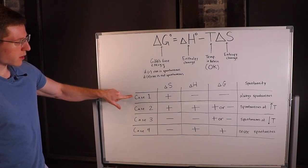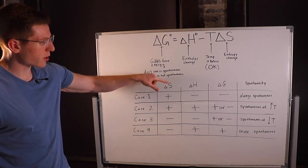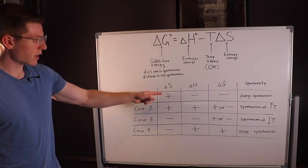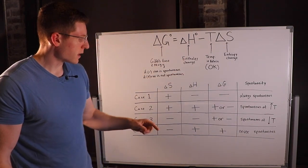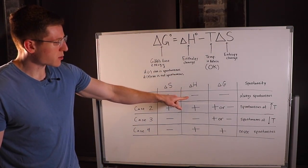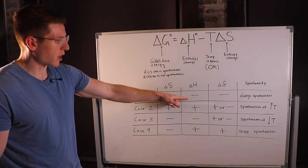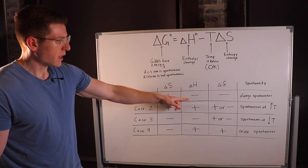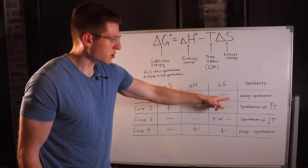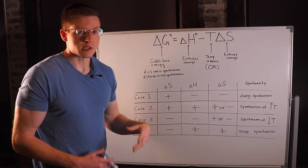In Case 1, we have a positive delta S — our entropy increased, we had an increase in randomness. We also have a negative delta H, meaning we had an exothermic reaction where delta H decreased and we gave off heat. Under these conditions, this is always going to contribute to a negative delta G, and thus the reaction is always spontaneous.